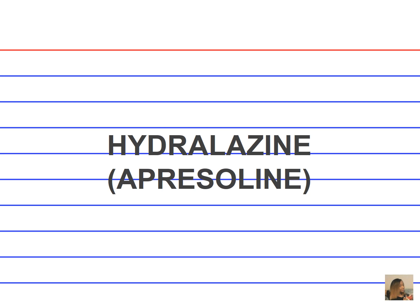Hydralazine, Apresoline. What is the drug classification for hydralazine? It's a direct-acting vasodilator. What is the indication for using hydralazine? It's a second-line hypertension drug. What are the adverse effects? Reflex tachycardia and fluid retention. How can these adverse effects be corrected? They can be minimized with beta blockers and diuretics.